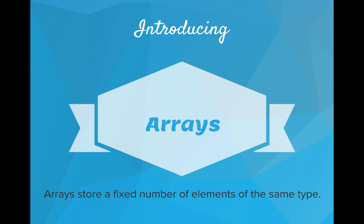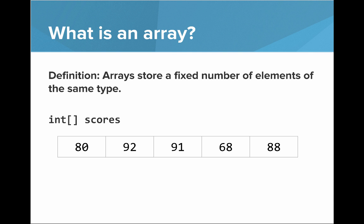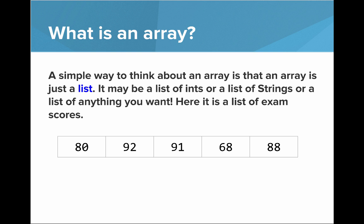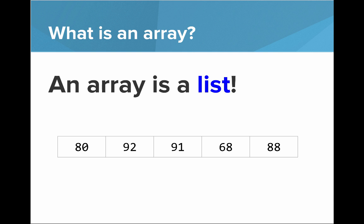Arrays store a fixed number of elements of the same type. So here we have an int array storing scores. A simple way to think about an array is that an array is just a list. It may be a list of ints or a list of strings or a list of anything you want. Here it is a list of exam scores. So simply, an array is a list.